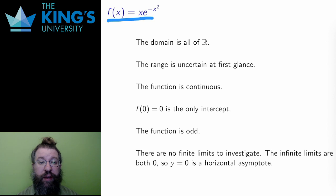The first function I want to sketch is f of x equals xe to the negative x squared. The exponential is defined everywhere, so the domain here is all of the real numbers. The range, as usual, is uncertain at the start. The function is continuous, which I get for free since this isn't a piecewise function.